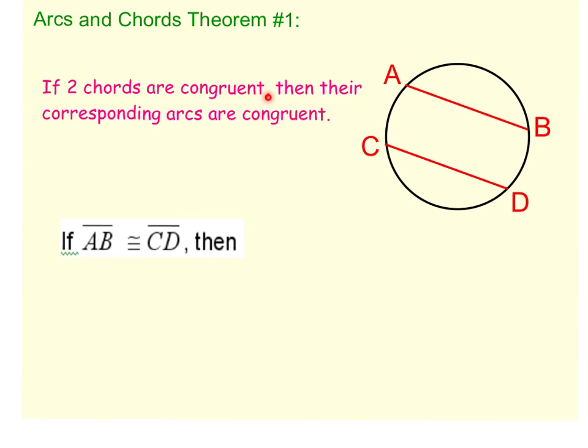If two chords are congruent, then their corresponding arcs are congruent. So what we're looking at here when we draw this picture is that AB and CD are congruent chords. That's where this part comes from right here. If chord AB is congruent to chord CD, then what has to be true?